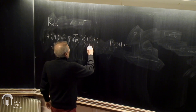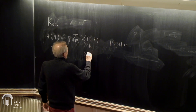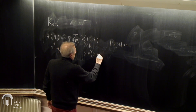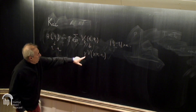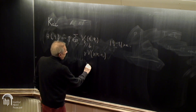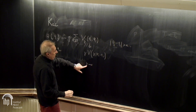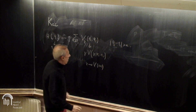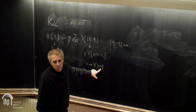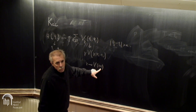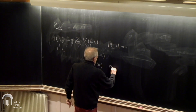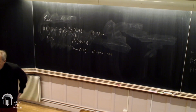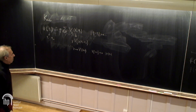B_gamma is given by gamma times a fixed function V of gamma*(QI - QJ). V is a function of one-dimensional variable R, and this function is a probability density, which I suppose smooth. I also suppose V(R) = 0 if R is larger than 1. This was not in the original Kac proposal, but it's convenient for my purposes.